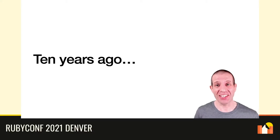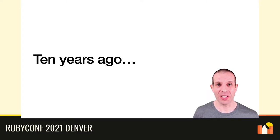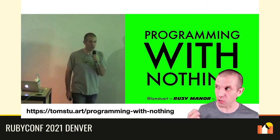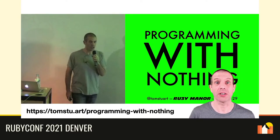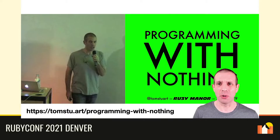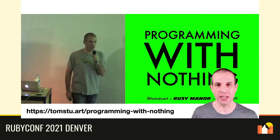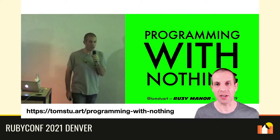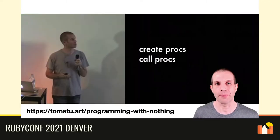Almost exactly 10 years ago, right at the end of October 2011, I gave a talk called Programming with Nothing at the Ruby Manor conference in London. The details of that talk aren't important — you can watch it if you're interested — but I'll very briefly summarize its conclusion so that I can build on it today.